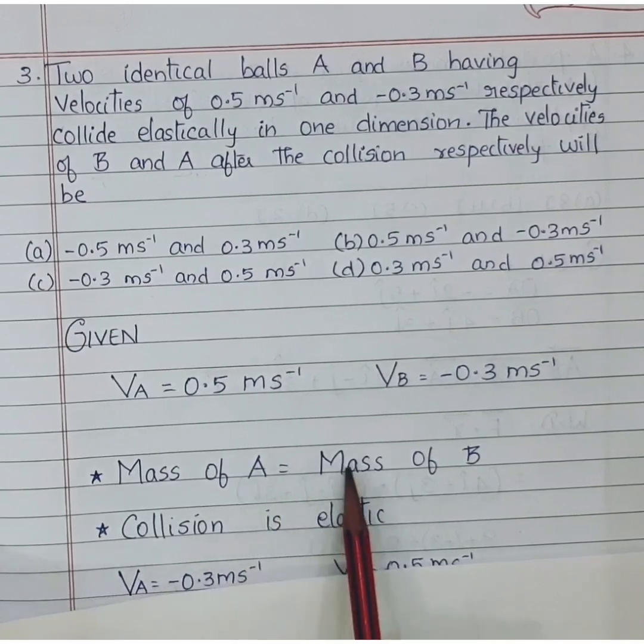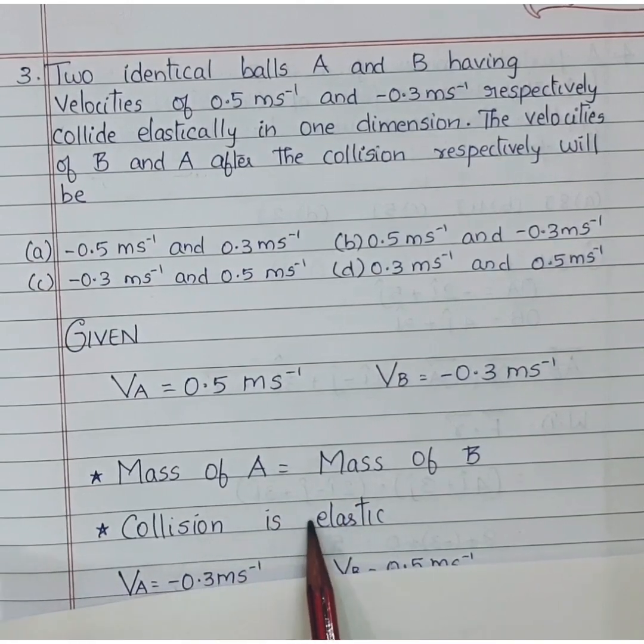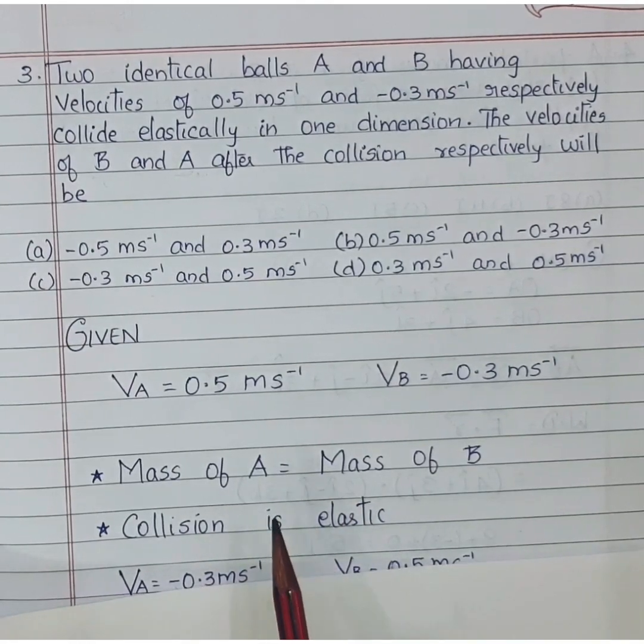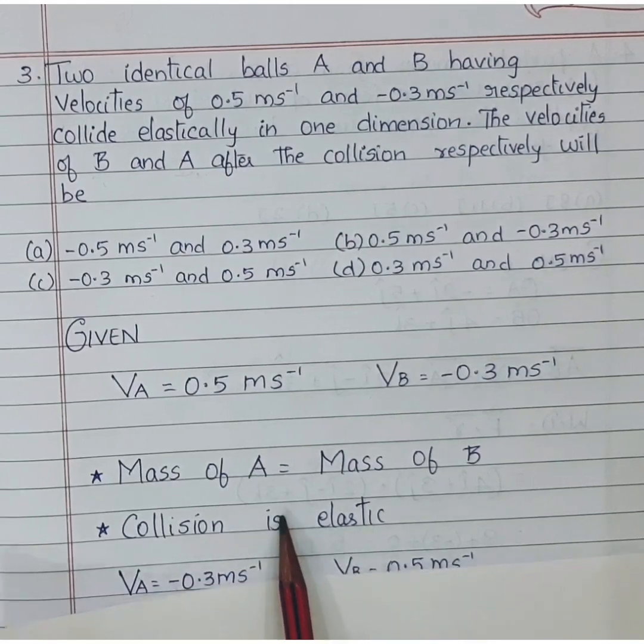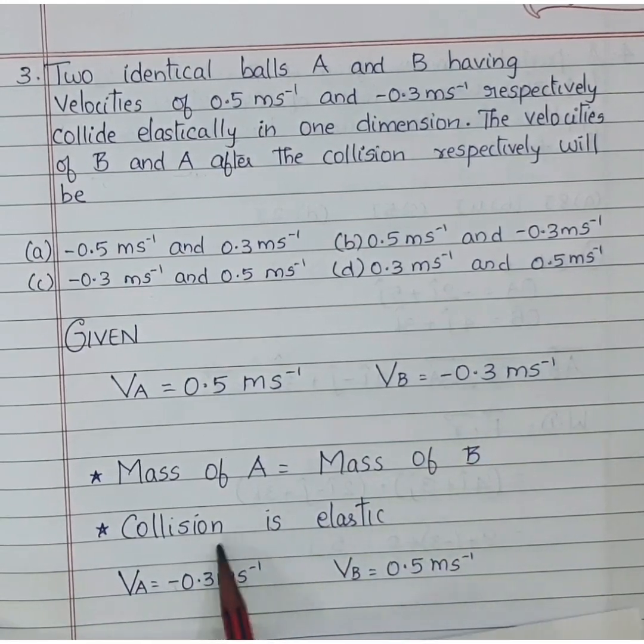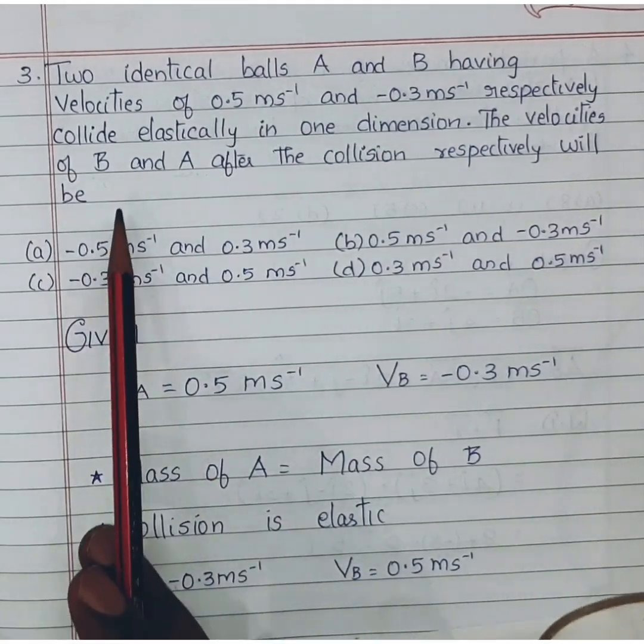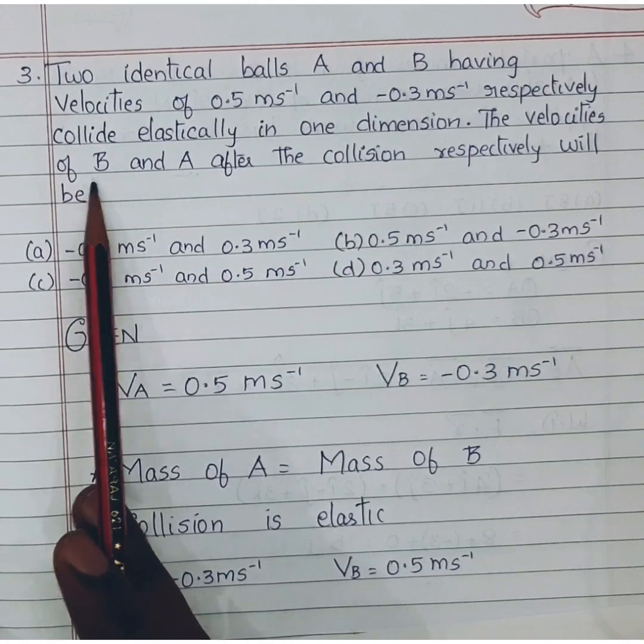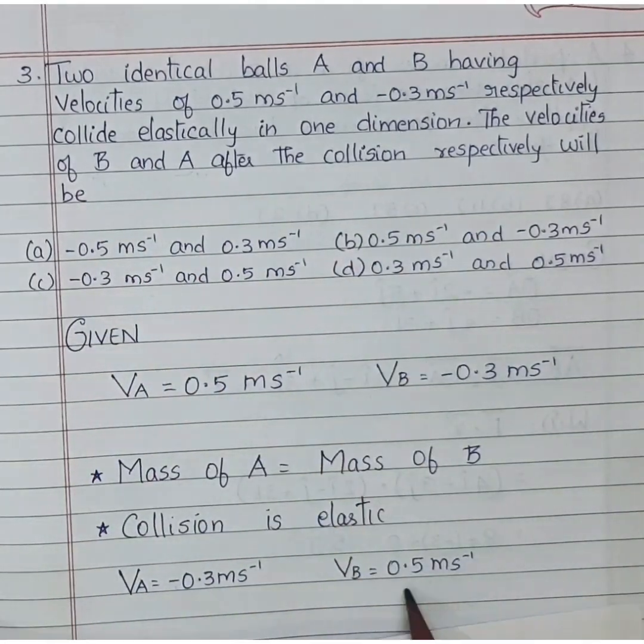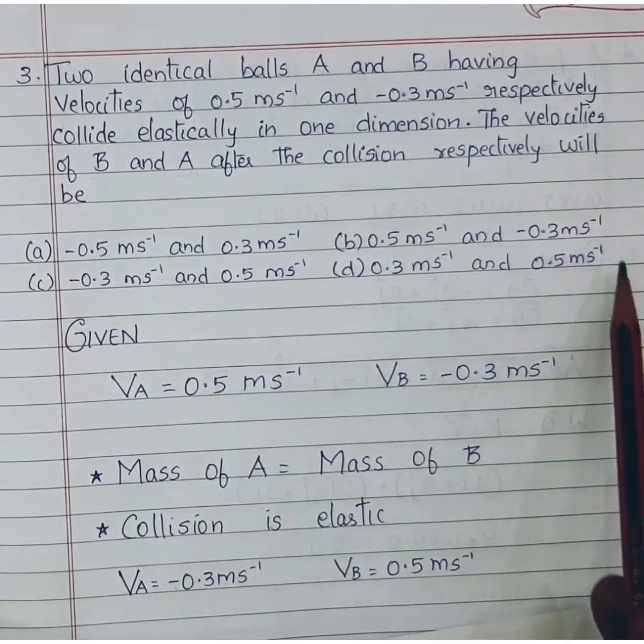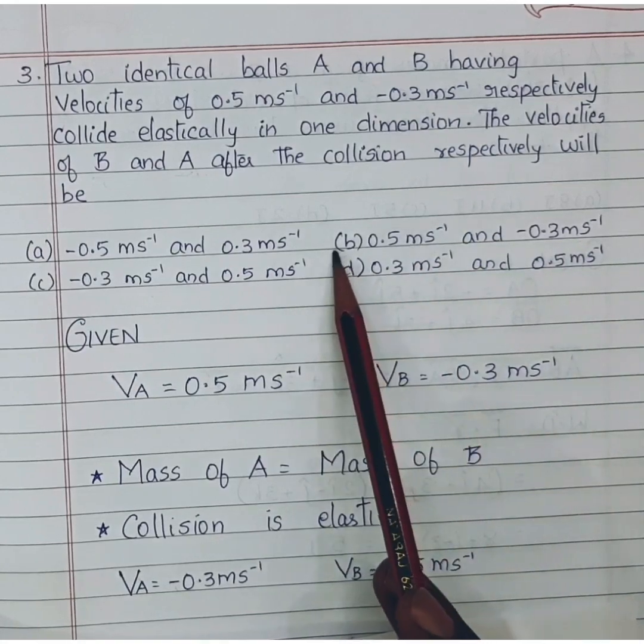So if mass of both the balls are same and if the collision is elastic then the balls will just interchange their velocities. That means Va will now become minus 0.3 and Vb will now become 0.5. But in the question it has been asked velocities of B and A respectively. So first is 0.5 and second is minus 0.3, so option B is the correct answer.